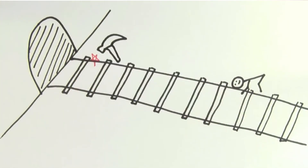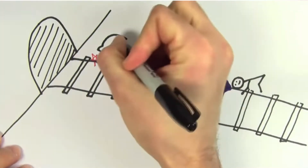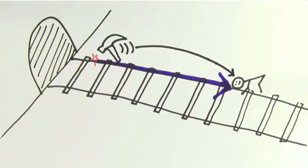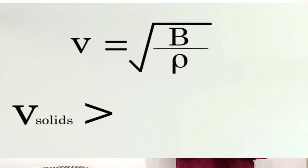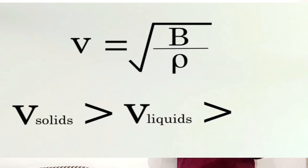For solid objects, the elastic modulus defines the stiffness of the material. For example, a brick is more stiff — its molecules are closer — rather than a marshmallow. You can apply force more easily on a marshmallow than on a solid object. So between the two, the brick has a greater elastic modulus. Therefore, substances with greater elastic modulus or stiffness allow sound waves to travel faster. So sound waves travel fastest in solids, then through liquids, and then through gases.